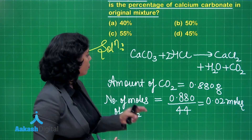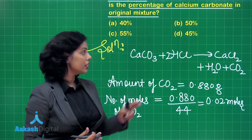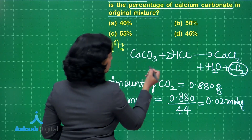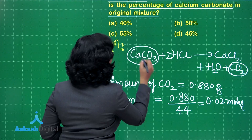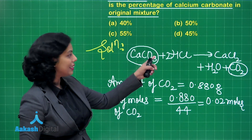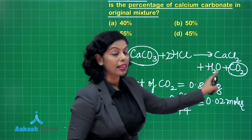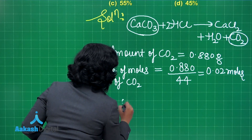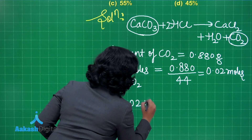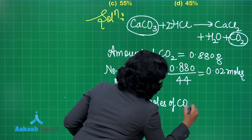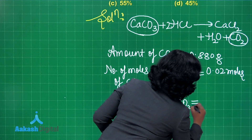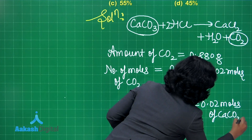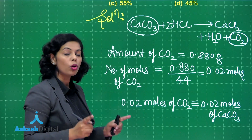So 0.02 moles is the number of moles of carbon dioxide produced. Looking at the chemical reaction, 1 mole of CO₂ is produced when 1 mole of calcium carbonate reacts with 2 moles of HCl. Since HCl is in excess, we compare calcium carbonate and carbon dioxide directly: 0.02 moles of CO₂ are produced by 0.02 moles of calcium carbonate, because 1 mole of CO₂ is produced by 1 mole of calcium carbonate.